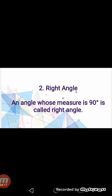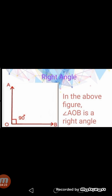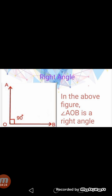Number two — Right angle. An angle whose measure is exactly 90 degrees is called a right angle. In the diagram, we have angle AOB and its measurement is given as exactly 90 degrees, so we can say that angle AOB is a right angle.